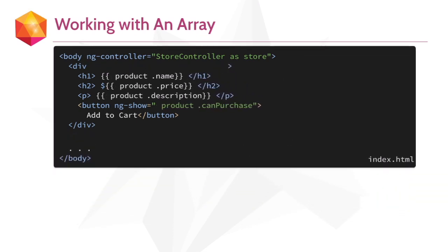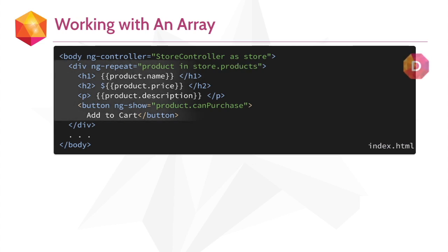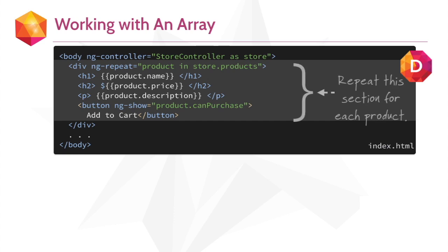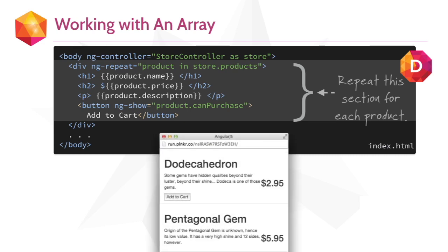To do this, we'll use the ng-repeat directive. The ng-repeat directive takes a special Angular expression. In this case, we're saying 'product in store.products'. store.products is the array we want to iterate through. Inside of this element, product refers to the current product, and we can print out all of its properties. This will get repeated for as many products as we have. So now if we jump into our browser, we can see that it shows us all of the products.